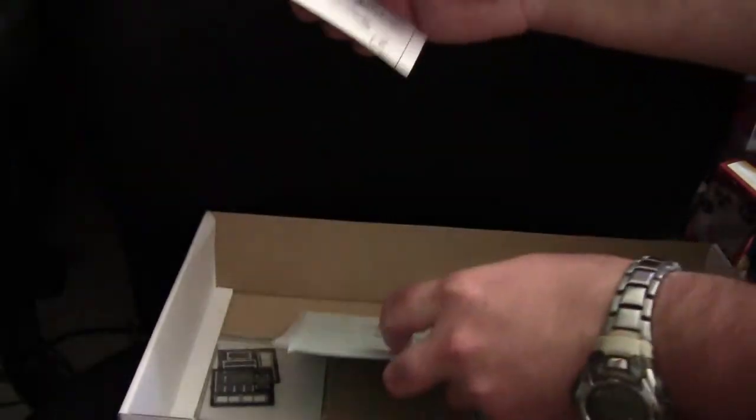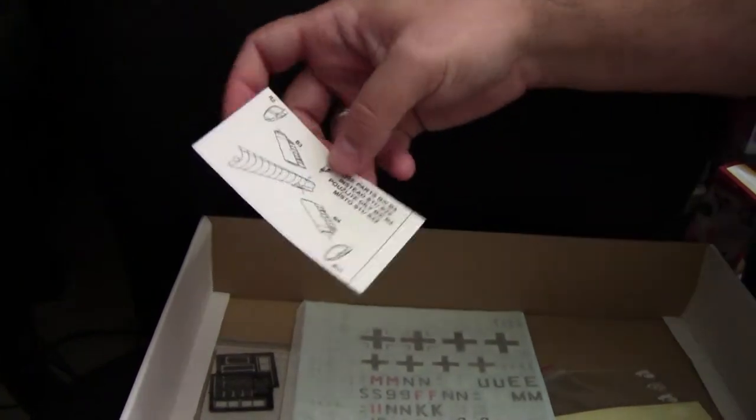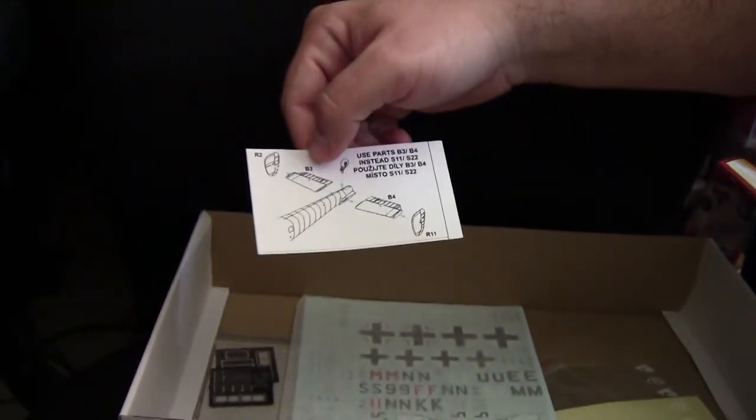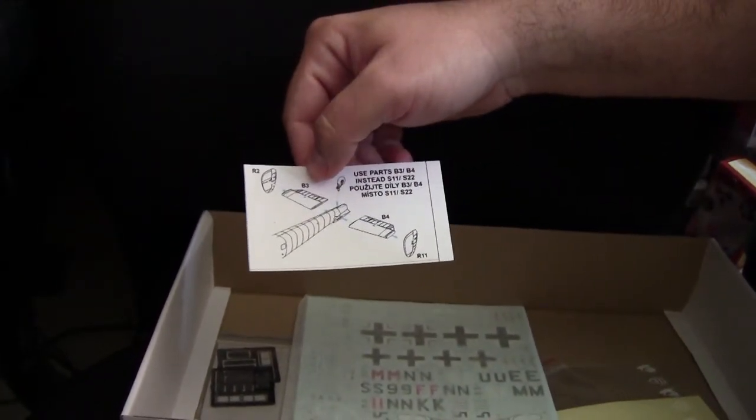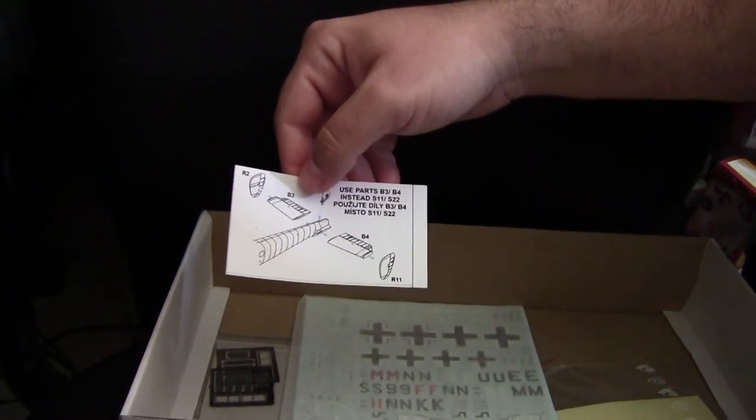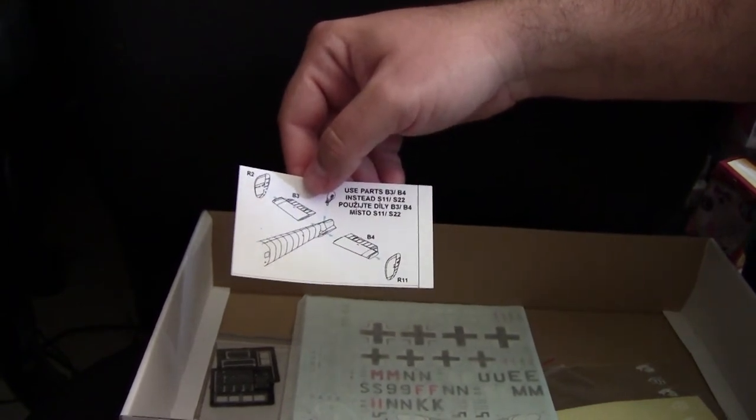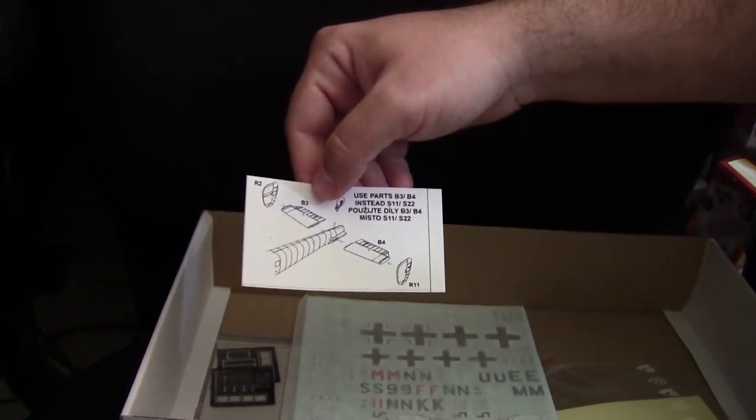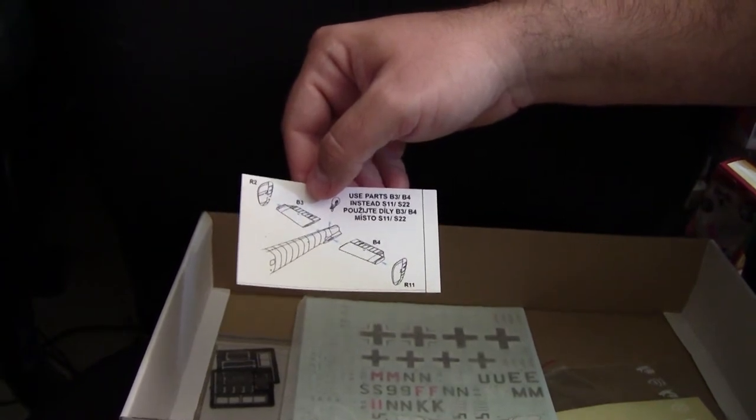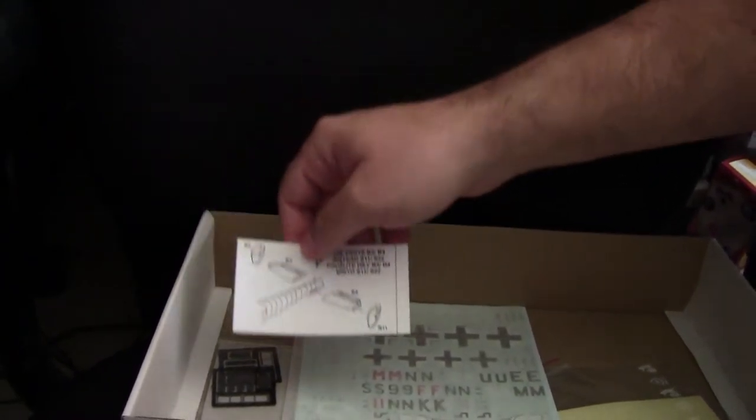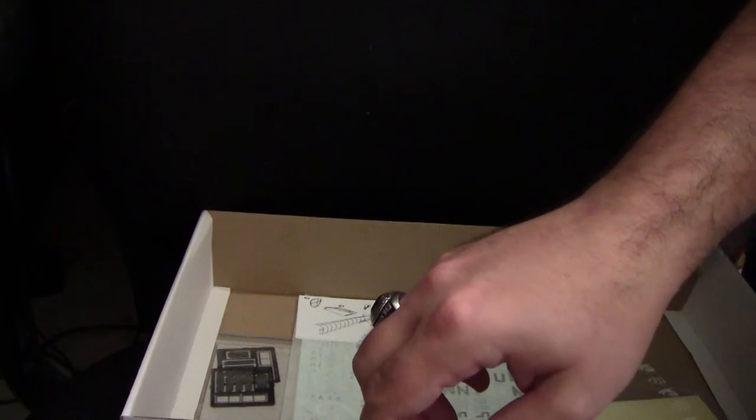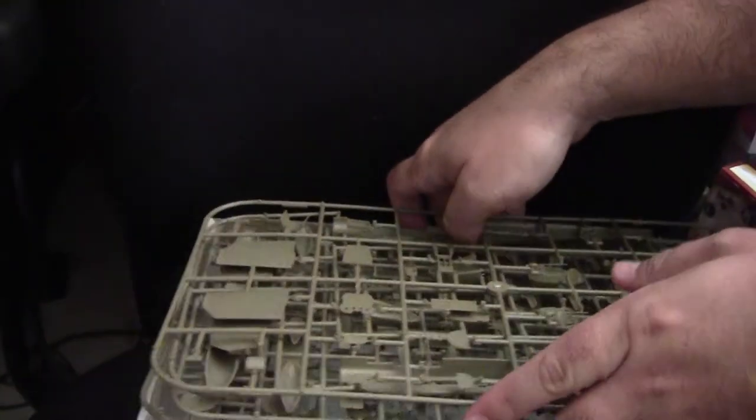Now one last little item before we move on to the instruction sheet is this little correction notice they included with the kit for what parts to use for the tail plane. This is something I do like about Eduard. Is that now if there is an issue, they'll include something like this to correct for it. Now let's get everybody back in.